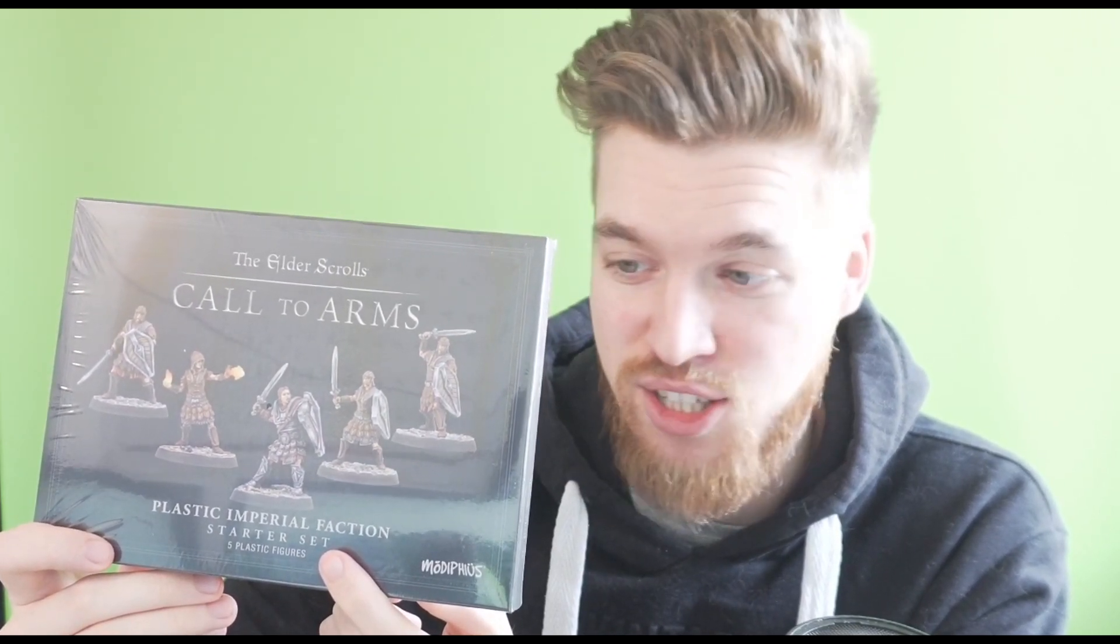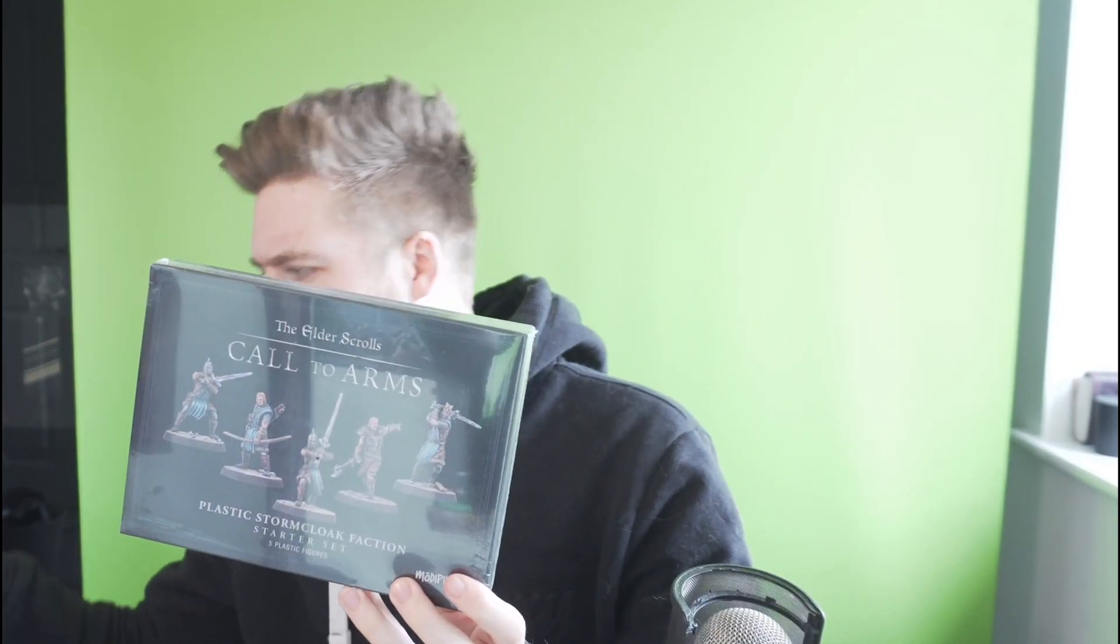We also have one Imperial Spellsword, who is the lady there with the two Firebolts in her hand, ready to cast. And we have three Imperial soldiers with swords and shields, and five bases. Very excited to paint that up. And then we have, obviously, Stormcloaks, because I think the theme they're starting out with here is Empire versus Imperials. So you and your friend could buy one of these sets, and then you could battle each other.